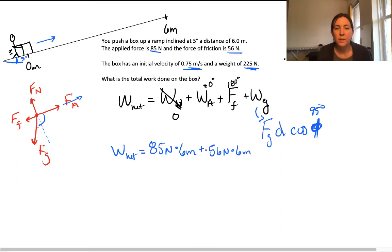That's going to be negative though, because it acts in the down-the-hill direction, plus our force of gravity, which is equal to the weight, 225 newtons, times 6 meters, times the cosine of 95. We put all of that into our calculator, and we get out a net work that is going to be 56 joules.